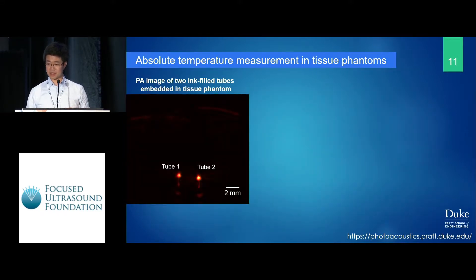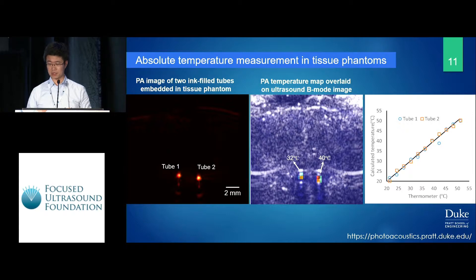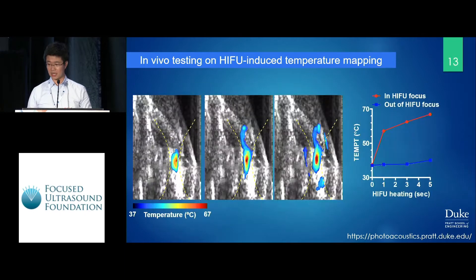We have some phantom study results. We measured, for example, two tubes in a chicken tissue phantom, and we can get pretty good temperature accuracy within a relatively wide temperature range. We also have hypertherapy measurements in vivo, and we can get pretty good temperature measurement in vivo as we perform three to five seconds of hypertherapy.